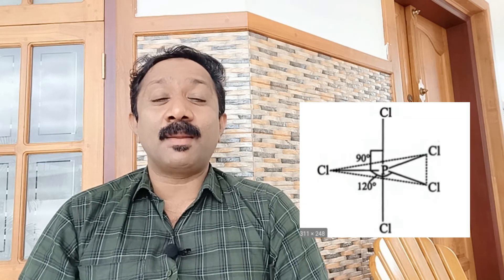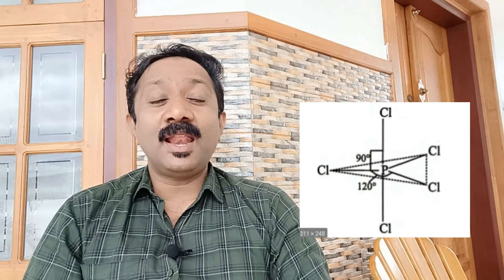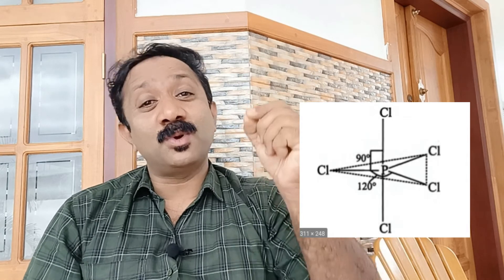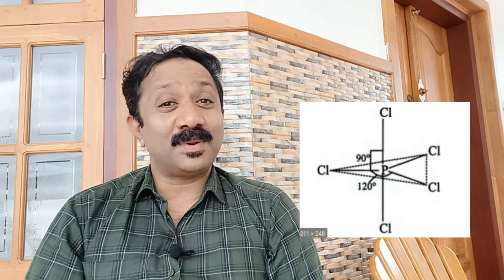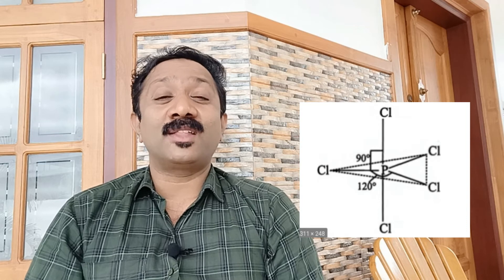The equatorial bond angle is more than 120 degrees, while the axial bond angle is 90 degrees. The axial bond experiences more repulsion than the equatorial bond. Therefore the axial bond is longer than the equatorial bond in PCl5. This is important.